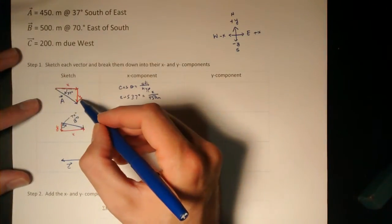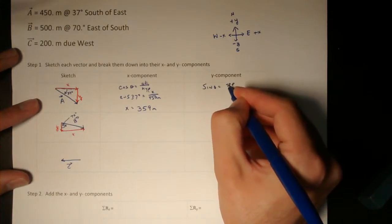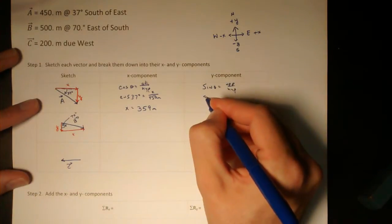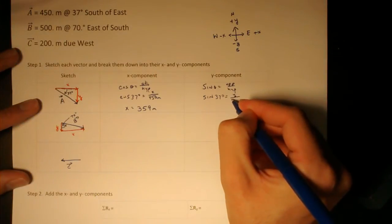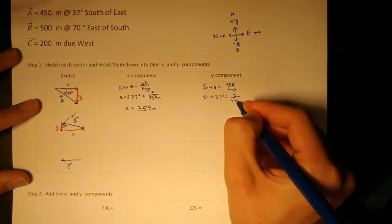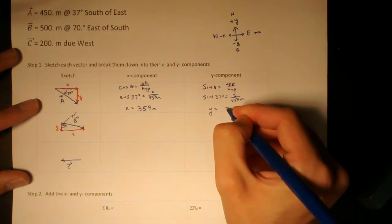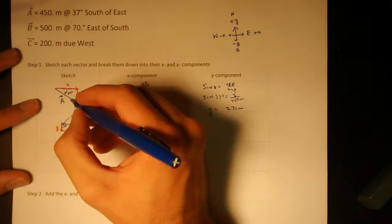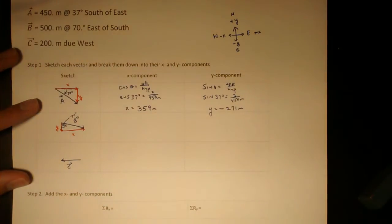To get the y component, which is opposite the angle, I'll use sine theta equals opposite over hypotenuse. So sine 37 degrees is equal to that y component over 450 meters. And so the y component is 271 meters. But I want to indicate that it's downward. And downward is in the negative y direction, so let's make that answer negative.